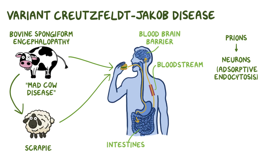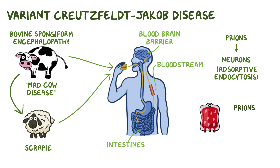Since the misfolded proteins are in the blood of individuals with variant CJD, if they try to donate blood, the prions can get transmitted to recipients of the blood, which can spread the disease. In fact, people in the UK who have received a blood transfusion since January 1980 are banned from donating blood for that very reason.